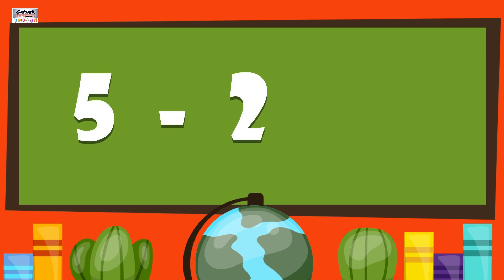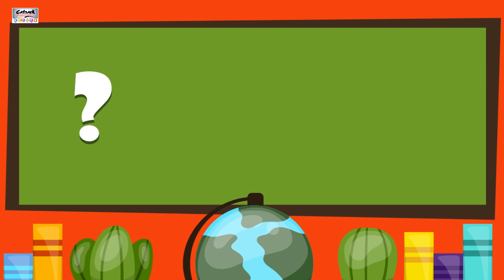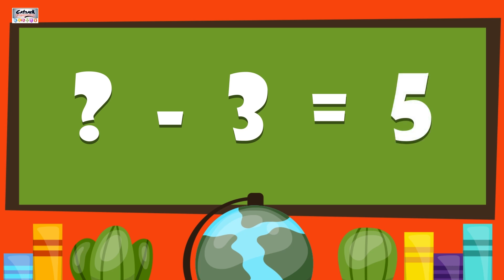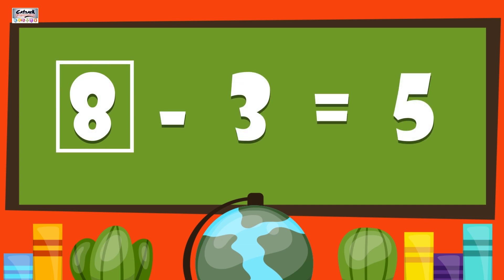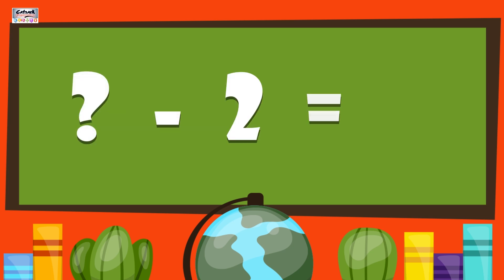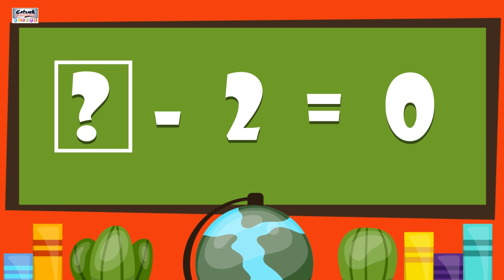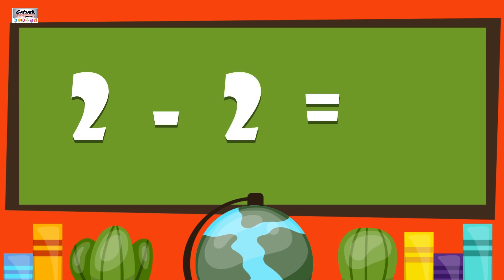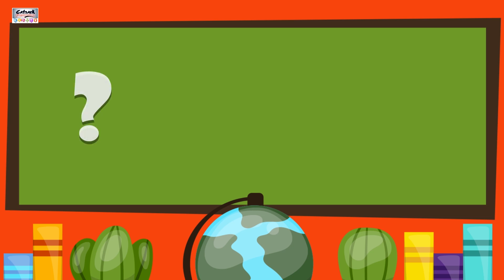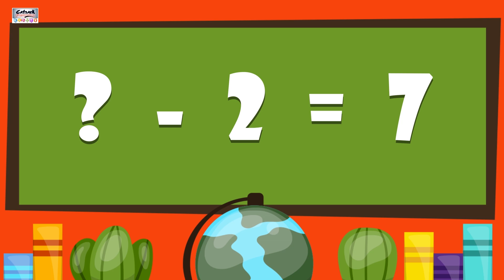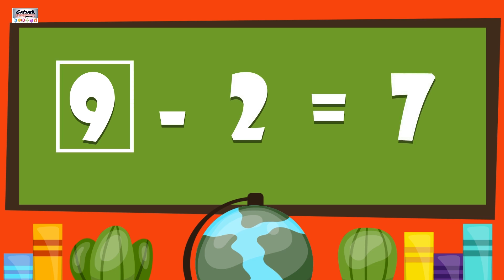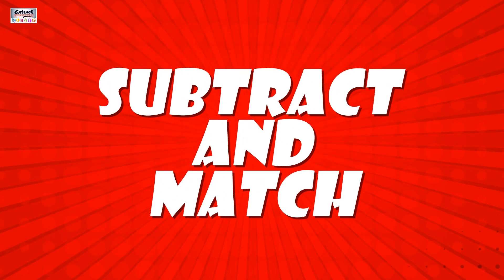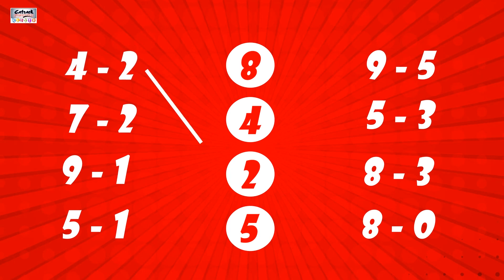5 minus 2 gives us 3. What minus 3 gives us 5? 8 minus 3 gives us 5. What minus 2 gives us 0? 2 minus 2 gives us 0. What minus 2 gives us 7? 9 minus 2 gives us 7.